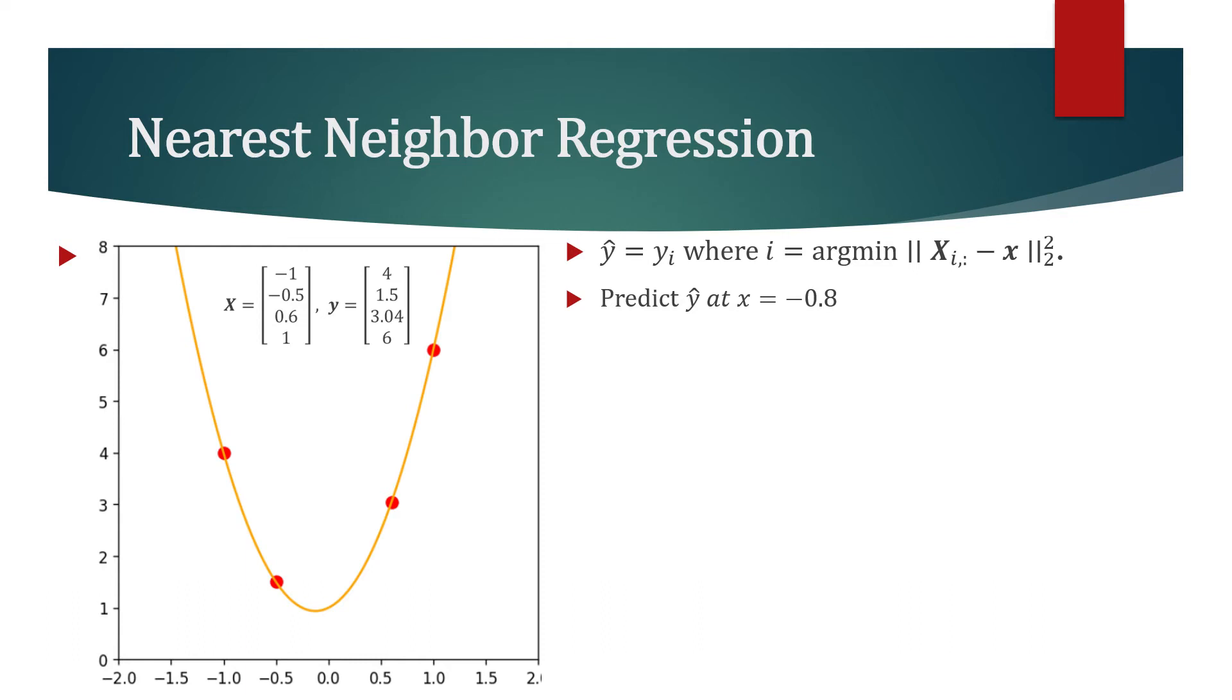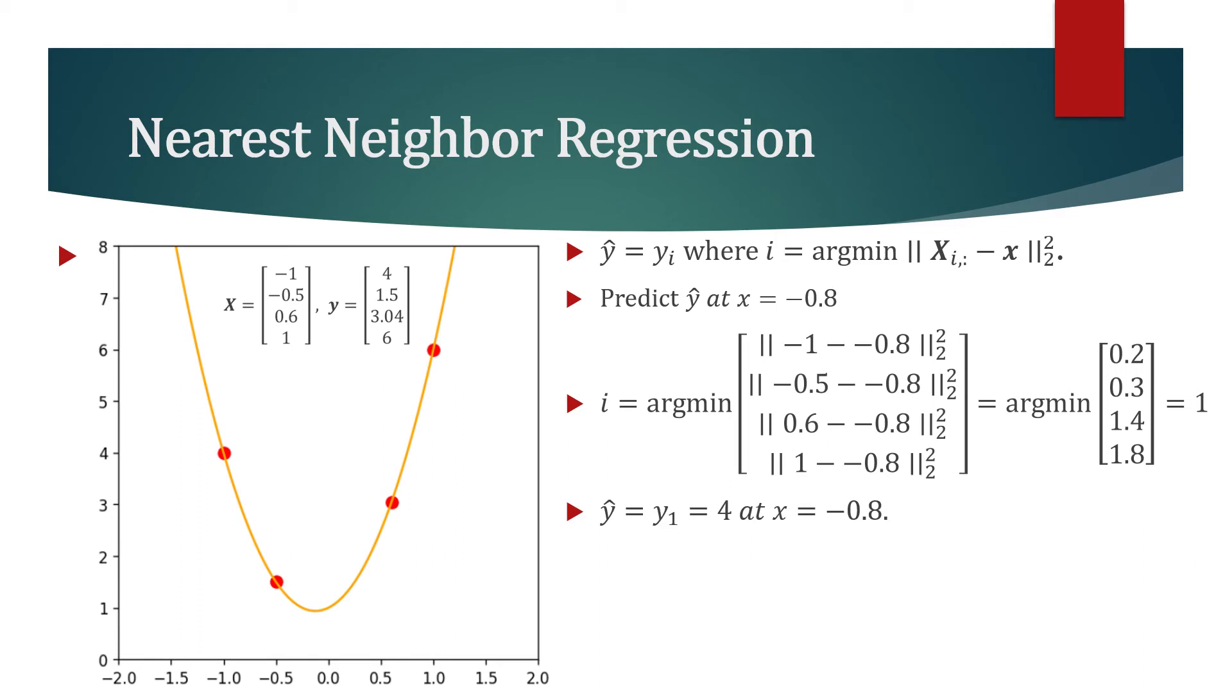First, we have to find an entry in the training set for which the Euclidean distance is minimal between the entry and x. After doing some math, we will find such an entry to be the very first one and the regression target for that input equals 4. So our prediction will also be 4.